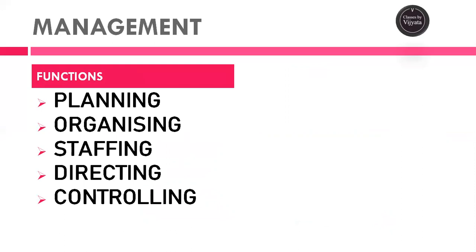If there is an activity, the manager will first plan for it, then organize the resources needed — sourcing, procurement, quantity. Then comes staffing — who will do the work, division of labor. Once staffing is done, the manager directs the manpower. Directing is a managerial function to guide workers and subordinates to do the work properly.